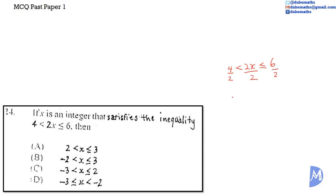4 divided by 2 is equal to 2. The 2s cancel to remain with x. And 6 divided by 2 is equal to 3. 2 is less than x, which is less than or equal to 3. The answer is A.